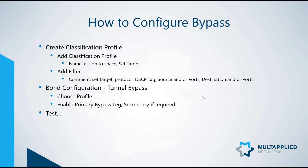How do we actually go about configuring all of this? It's actually very easy. The quick steps are: we create the classification profile — we add it, name it, assign it to the space, set a target, and add a filter. The filter tells us what traffic goes where. Then we go into the bond itself, choose the profile, enable the primary and secondary legs if required, test it, and make sure it's all going to work.